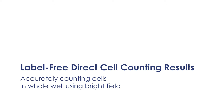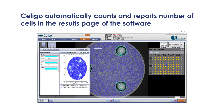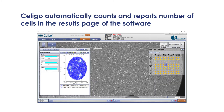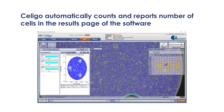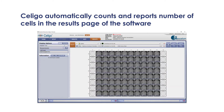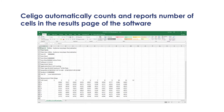After capturing the whole-well brightfield images, the cells are identified in the whole well with the three posts excluded. Soligo automatically generates a total cell count per well shown in the results page, which can be exported directly to Excel for the normalization process.